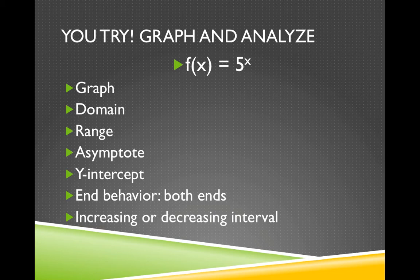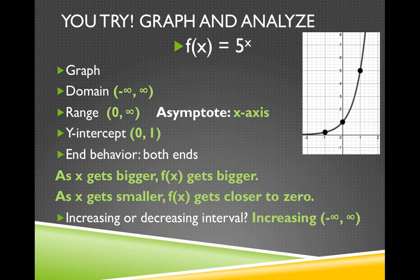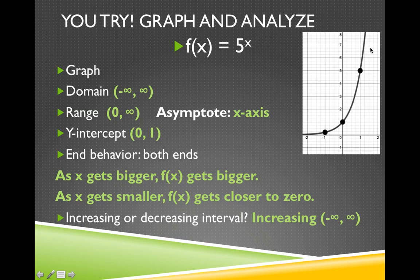Now try to graph and analyze f of x equals 5 to the x. Pause the video, do this on your paper, then come back and check. Here are the answers: the domain is all real numbers, the range is from 0 to infinity not including 0, because there is an asymptote at y equals 0, which is the x-axis. The y-intercept is 1. For end behavior: as x gets bigger, f of x gets bigger; as x gets smaller, f of x gets closer to 0. This is an increasing function over its whole domain.